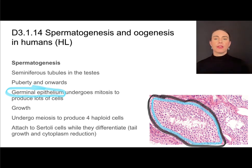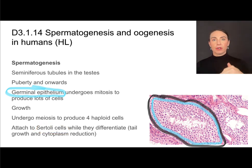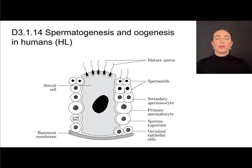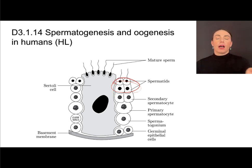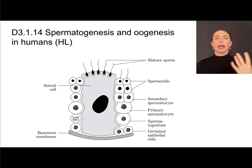Those four haploid cells are then going to attach to a special type of cell called a Sertoli cell while they differentiate, grow, and develop into sperm. Here we can see the developing sperm with their tails poking out. The germinal epithelial cells are capable of undergoing mitosis to create more of themselves, or they can undergo meiosis one and two to produce four haploid cells. These haploid cells aren't mature sperm yet — they need to grow, differentiate, and develop structures like a tail and the acrosome.